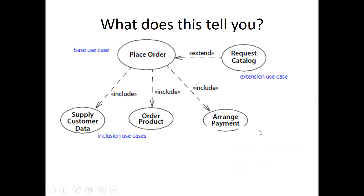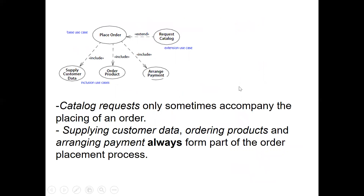This tells us there are three includes and one extend. The extend is 'request catalog' — when a customer places an order, the catalog request becomes an extend under certain conditions; for example, if the customer ticks 'email me your catalog.' But supply customer data, ordering products, and arranging payments are always part of the order placement process.